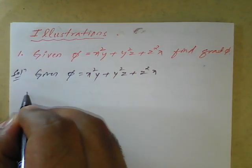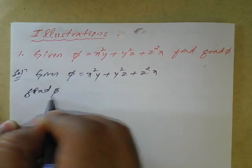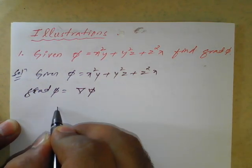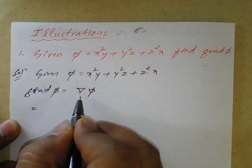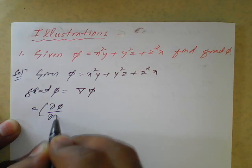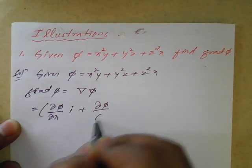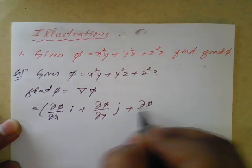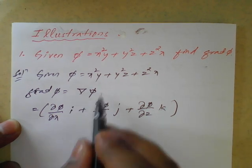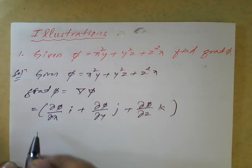Gradient phi is symbolically written as del phi. This can be written symbolically as: del phi equals dou phi by dou x of i plus dou phi by dou y of j plus dou phi by dou z of k. This is the gradient phi formula. Here we will replace this phi value and we will see.